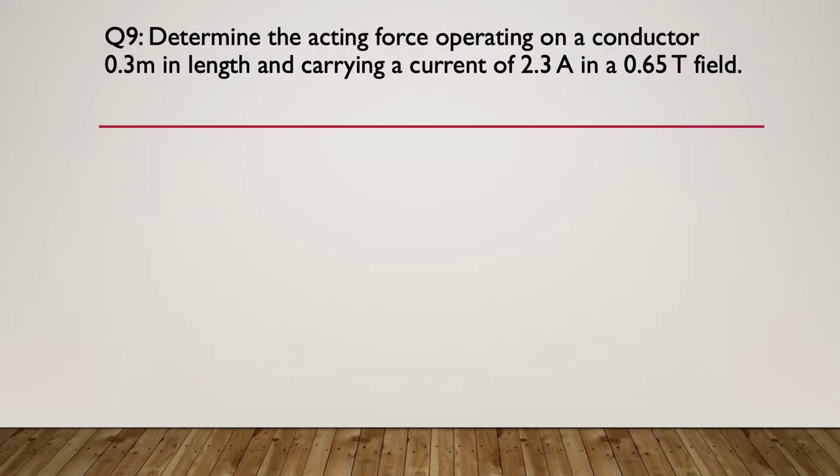Question nine. Determine the acting force operating on a conductor with a length of 0.3 metres, carrying a current of 2.3 amps, in a 0.65 tesla field. Similar to the last question — pause here.